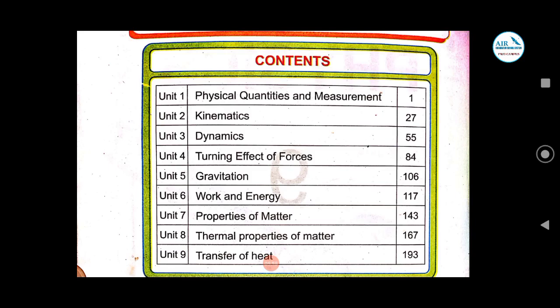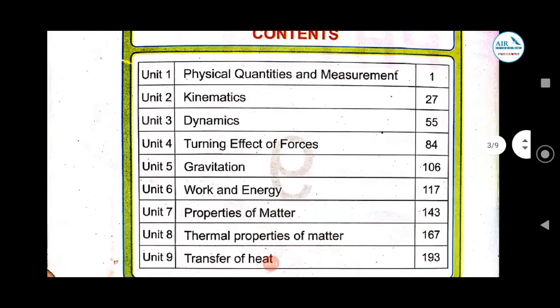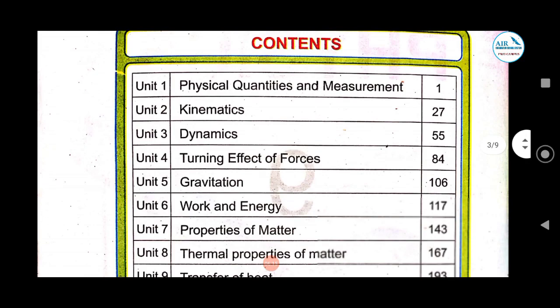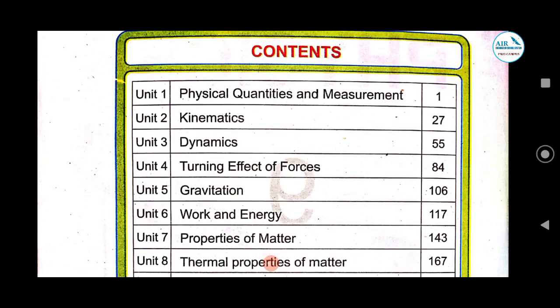In the next chapter, we will discuss kinematics. Kinematics and dynamics both deal with motion. When any body moves — for example, a man is walking, a car is moving, an aeroplane is flying — these are all kinds of motions. We will mainly discuss motion: what types of motion there are, and what causes motion.